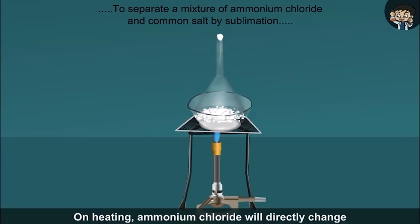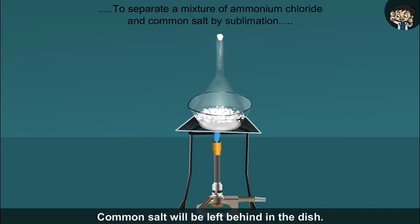On heating, ammonium chloride will directly change from solid to vapor and condense on the upper cooler parts of the funnel. Common salt will be left behind in the dish.